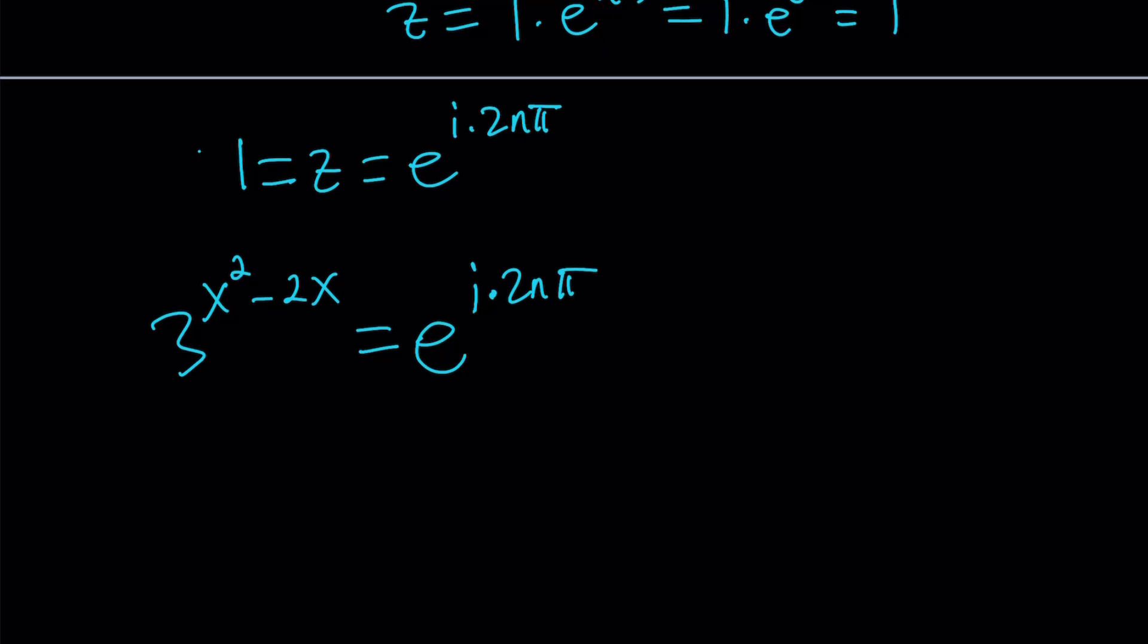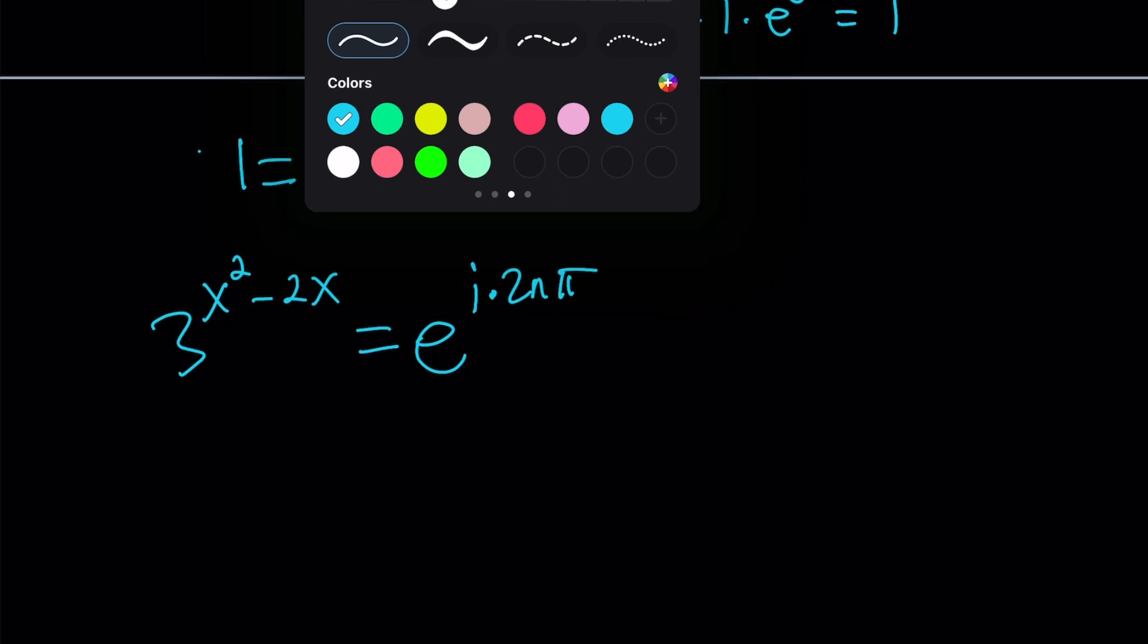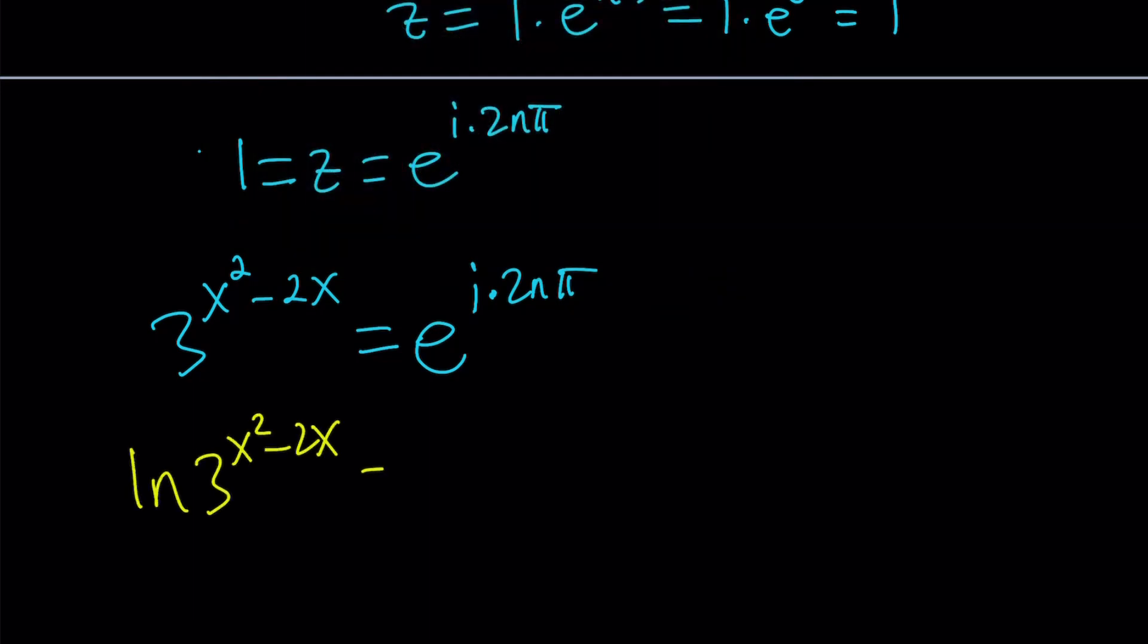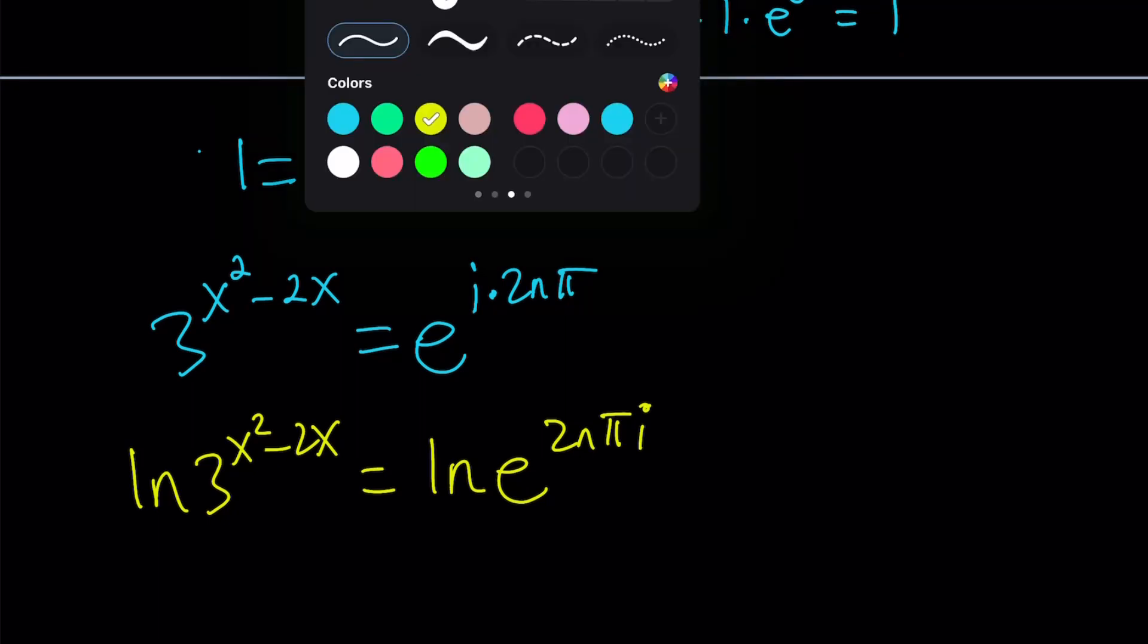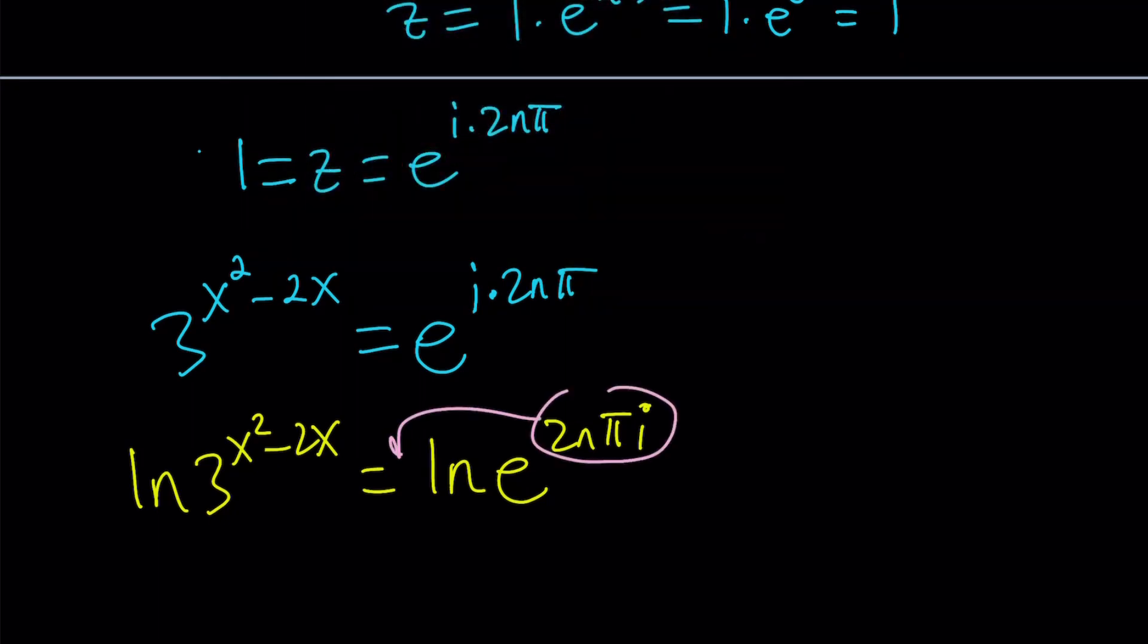Now, what are we going to do next? Log both sides. But use natural log so you can get rid of the e on the right-hand side. So let's go ahead and ln the left-hand side and ln the right-hand side. And if you want, you can also write this exponent as 2n pi i. Now, using properties of logs, we're going to bring these down. And that's going to give us x squared minus 2x multiplied by ln 3 equals 2n pi i times ln e. But ln e is equal to 1, so we don't have to worry about it. So far, so good.